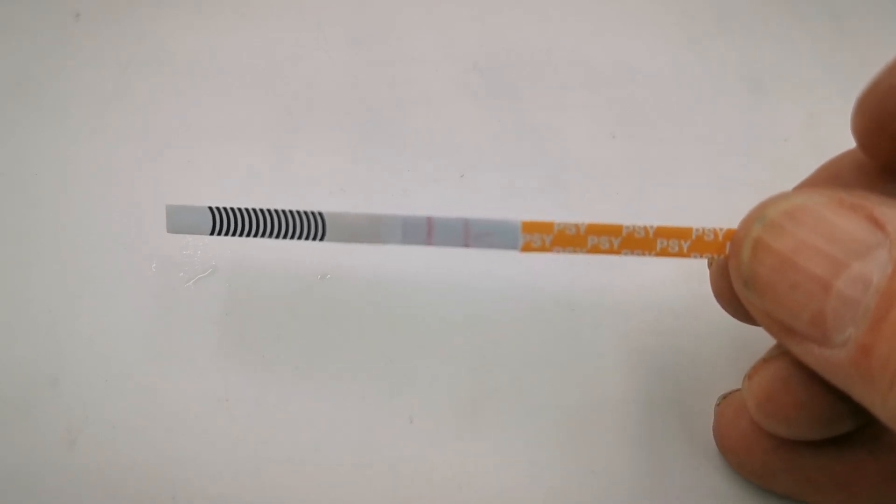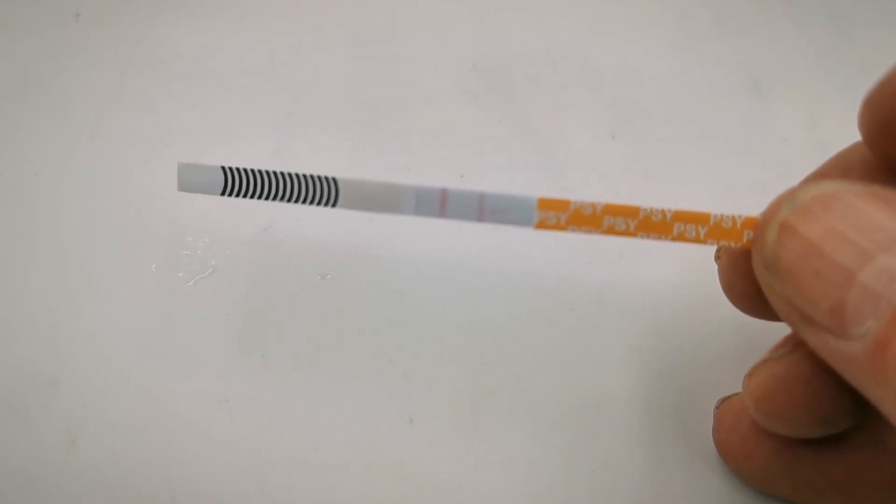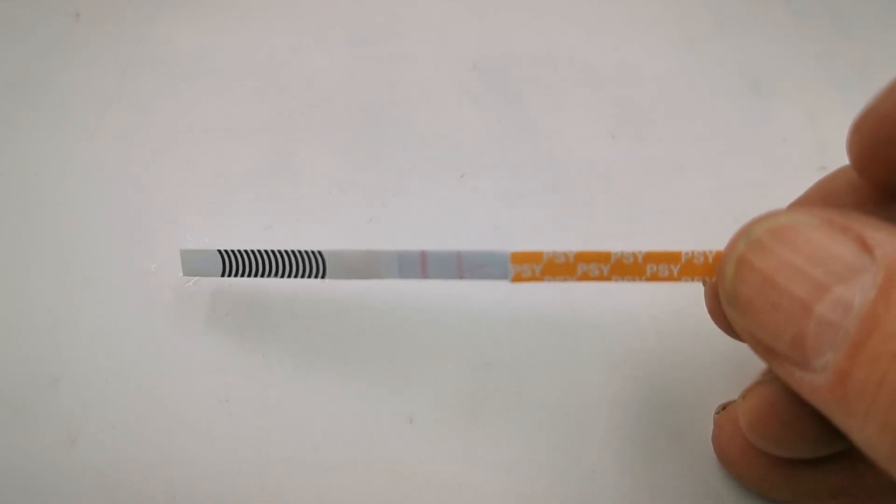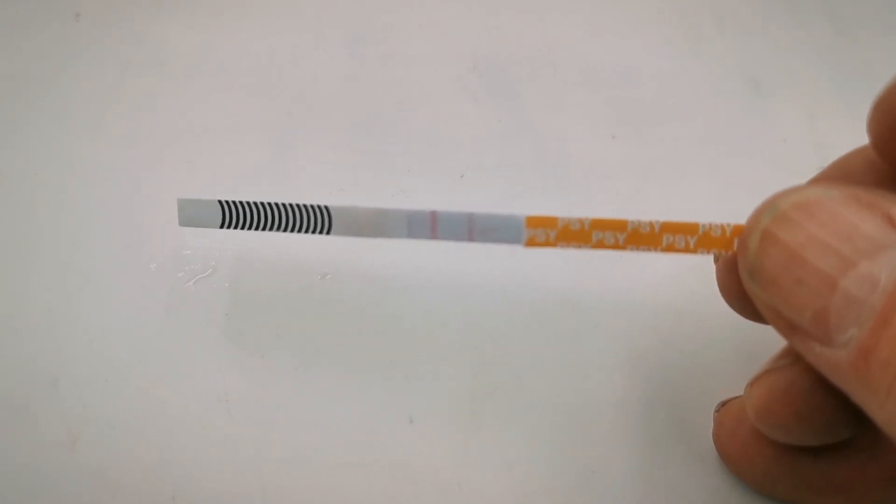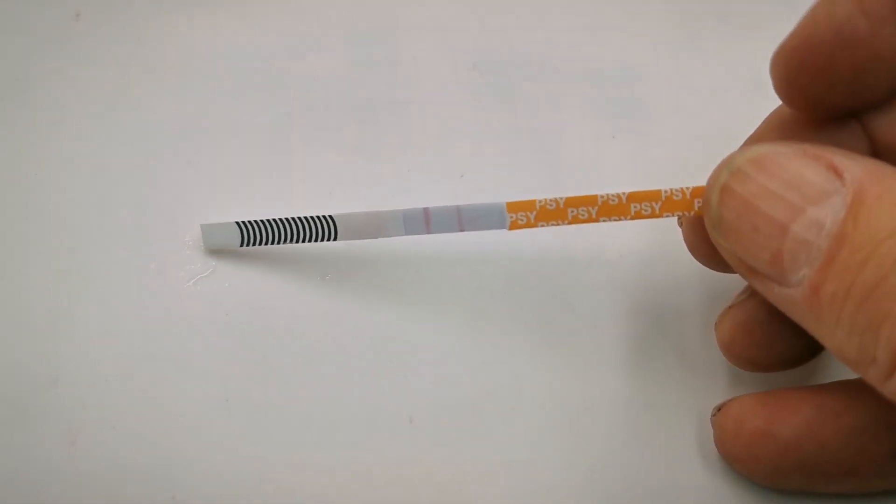So that's how to screen urine for psilocybin magic mushrooms at the 500 nanogram cutoff that these tests detect down to and that is a tiny amount so it will pick up those residues for the period of time quoted in the test listing.